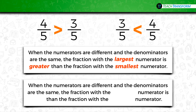Here's one of the ways: when the numerators are different and the denominators are the same, the fraction with the largest numerator is greater than the fraction with the smallest numerator. You'd have to have the words largest, greater, and smallest for that sentence to be correct.